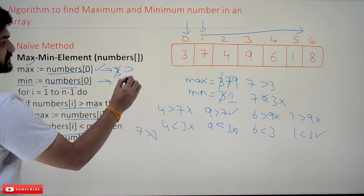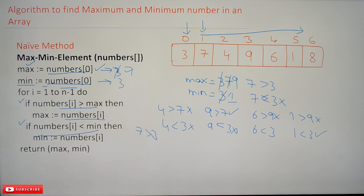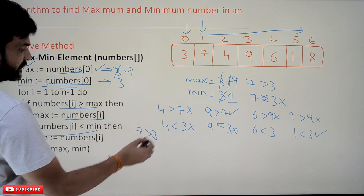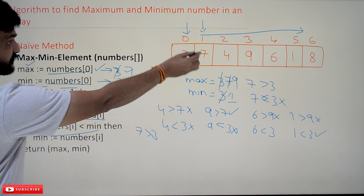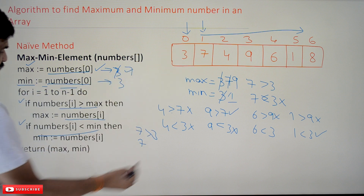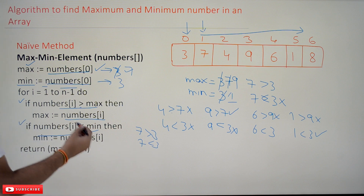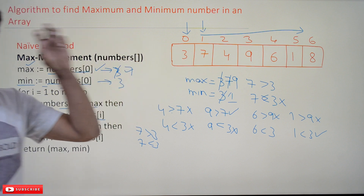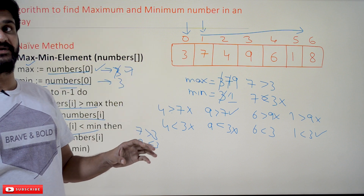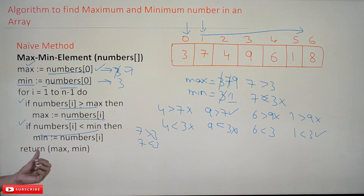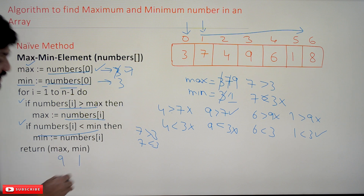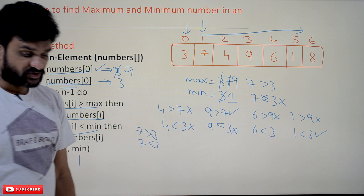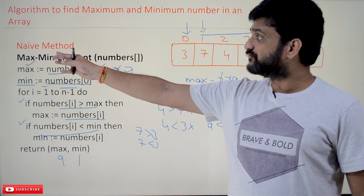Similarly, the next comparison: numbers[i] which is 7 — is 7 less than 3? No, it is not true. In this way all iterations are completed, and by the end we get the maximum element and the minimum element. The function returns max and min, so it returns 9 and 1 in this case.